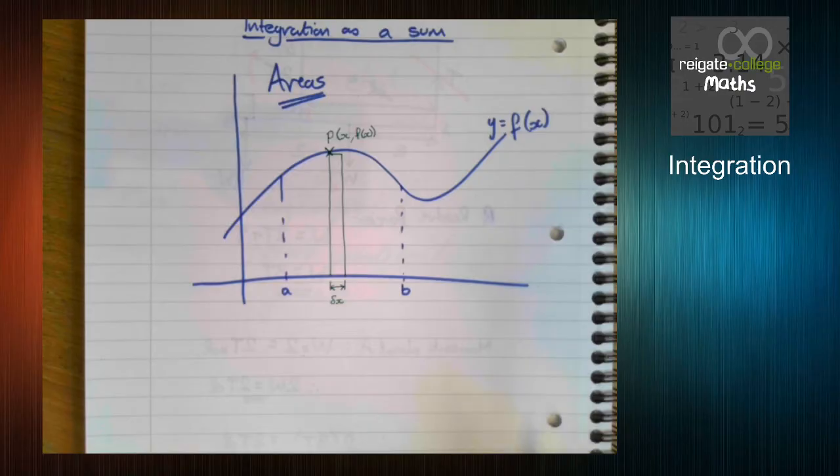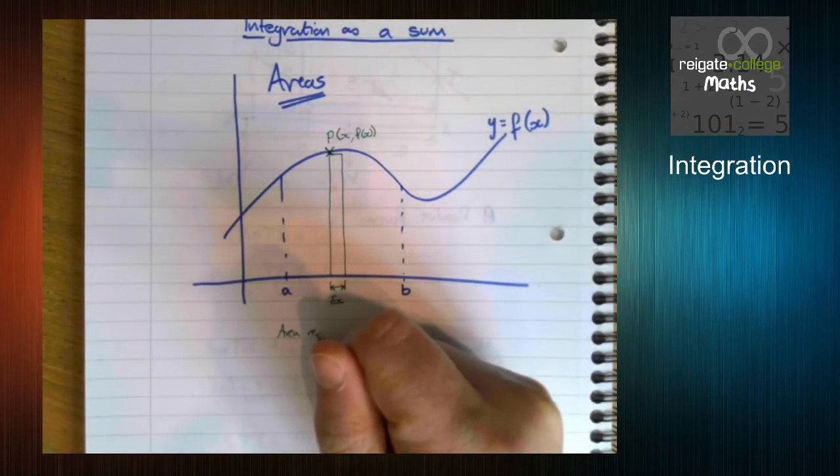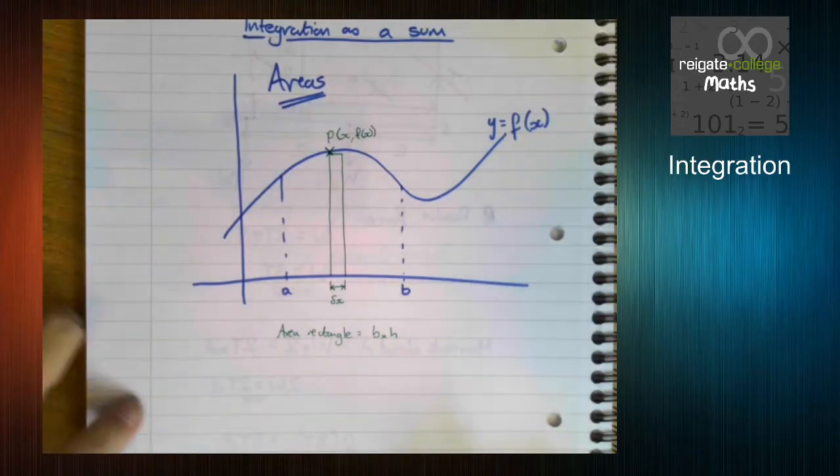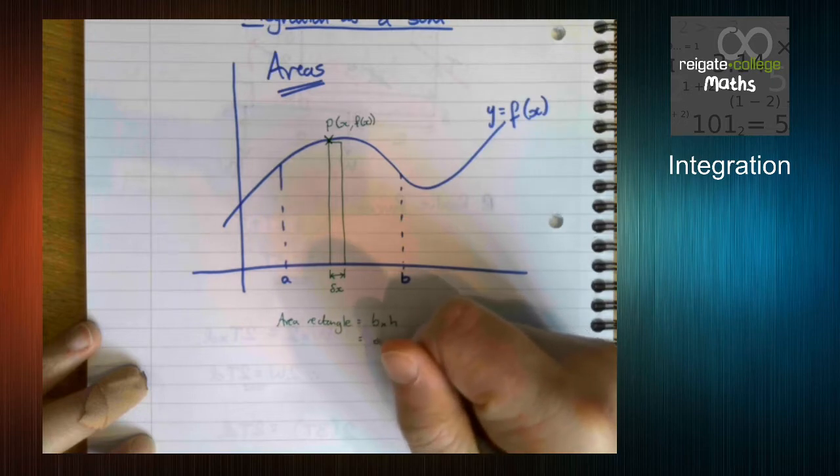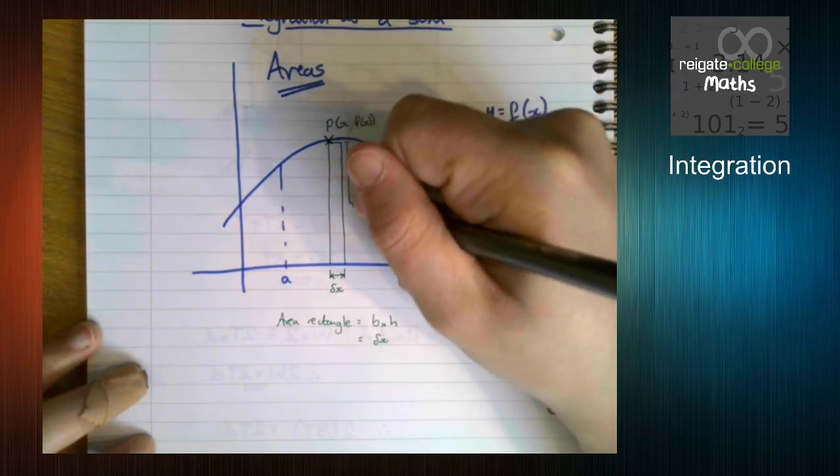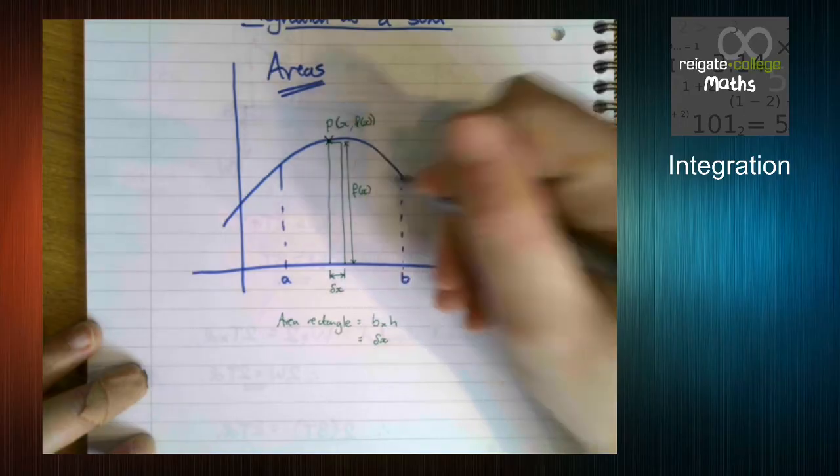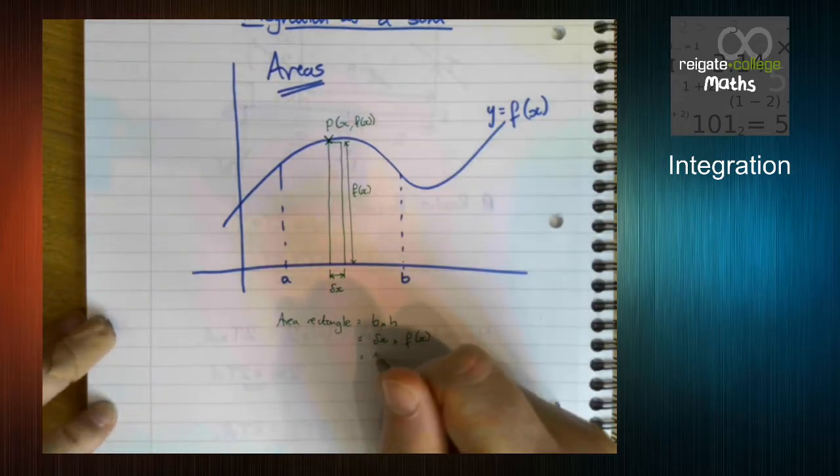So what is the area of this rectangle? Well we know it's base times height because that's the area of a rectangle. So what is the base? Well the base is this delta x. And the height? Well the height is this, which is the y coordinate. So it's delta x times f of x, which I'm just going to write the other way around.